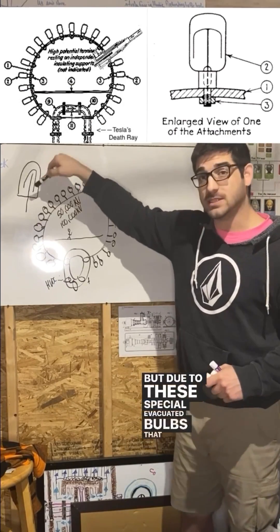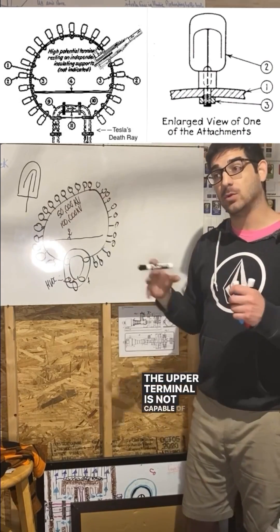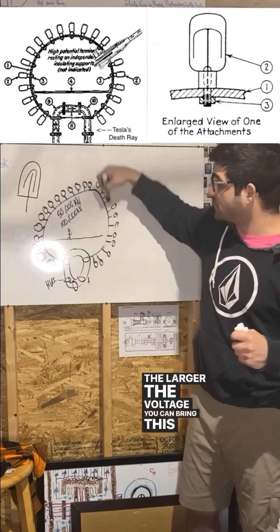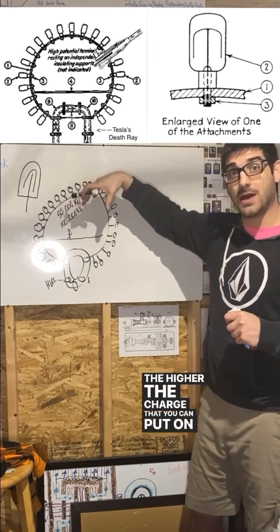Due to these special evacuated bulbs that Tesla designed, the upper terminal is not capable of arcing off. The larger the voltage you can bring this upper terminal to, the higher the charge you can put on there, and the larger the electrostatic force that can be applied to some particle if it's the same charge.